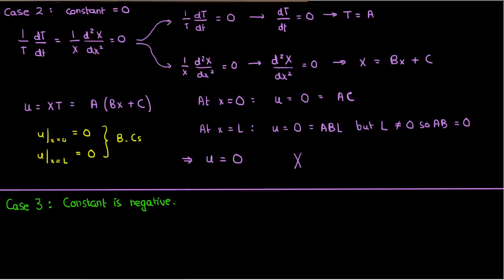When we have a negative constant, we can write that constant as negative lambda squared, since squaring any real number will always give you a positive value. And so a negative of that square will always be negative, which means our separated differential equation will look something like this.